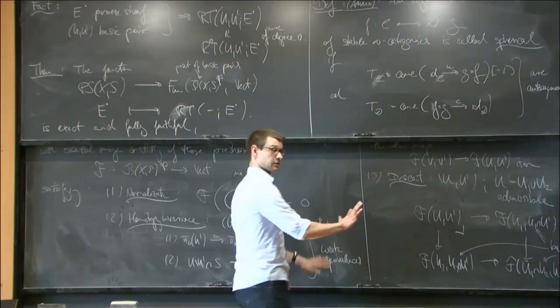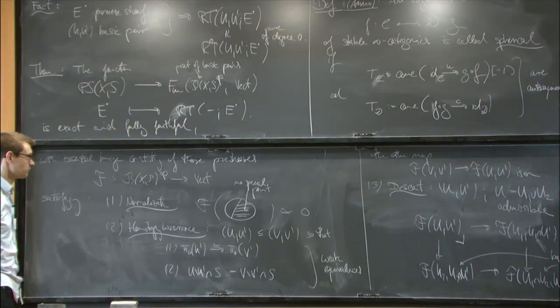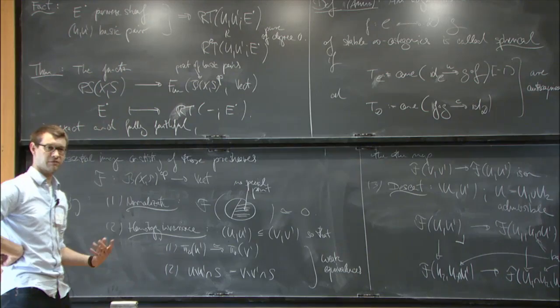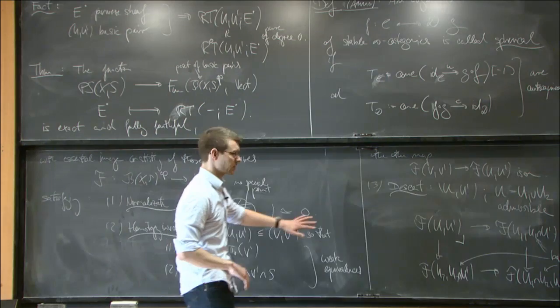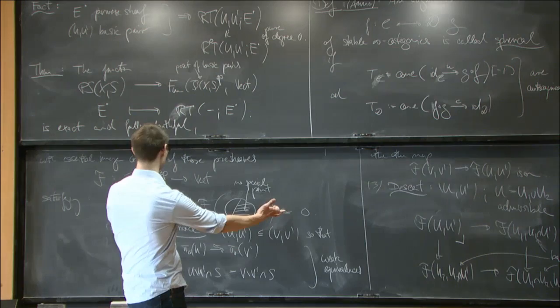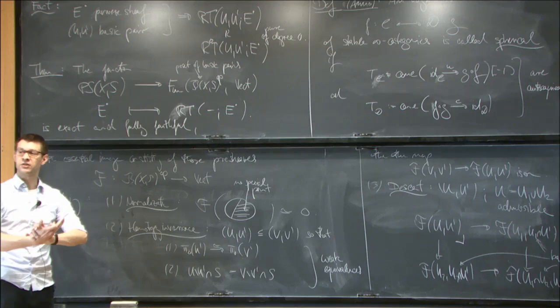In other words, what we have here is somehow fun: there's the notorious statement that perverse sheaves are neither perverse nor are they sheaves. What we're trying to do is disprove the fact that they're not sheaves — because they are sheaves in precisely this sense, just measured in a slightly different way using these basic pairs, giving a descent condition at the level of vector spaces.